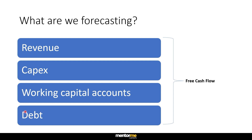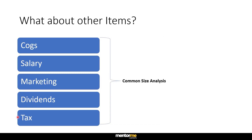And finally, debt — if the company has a lot of debt and you are able to figure out what kind of repayment structure is going to happen. Debt is also a little more complex because you can also have leases in it, which might appear to you as not debt but is actually debt. So that's the overall idea of what we are actually forecasting. Now, what do we do with the other items — for example, cost of goods sold, salary, marketing, dividends, and taxes? These amounts actually don't change much as a percentage of the one big number, which is revenue.